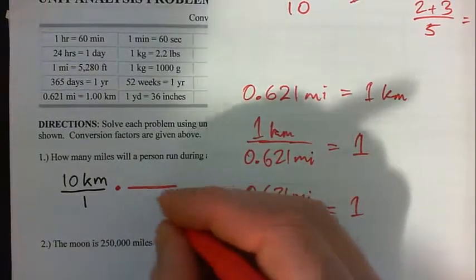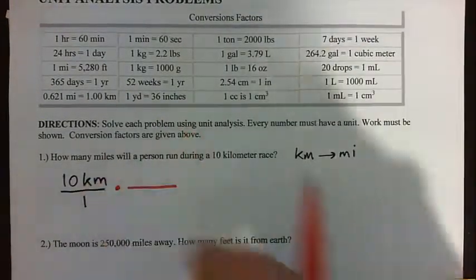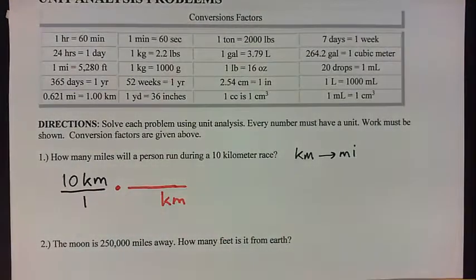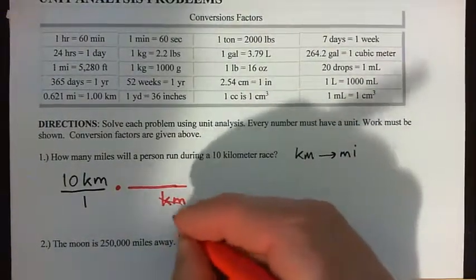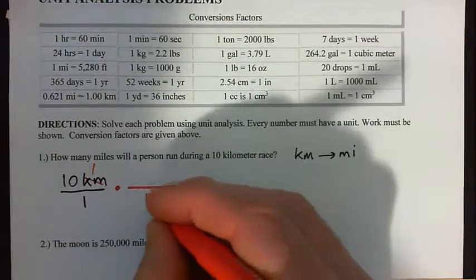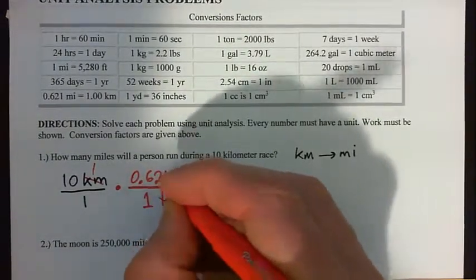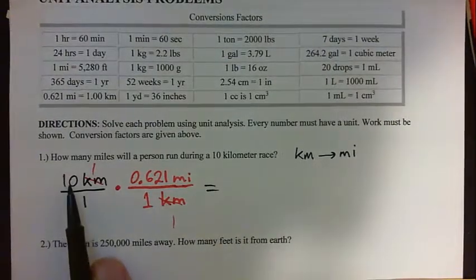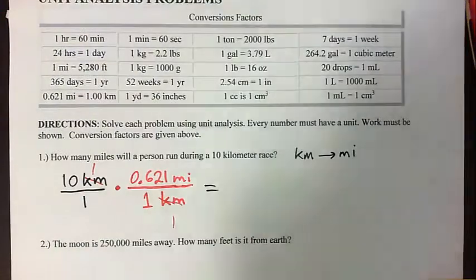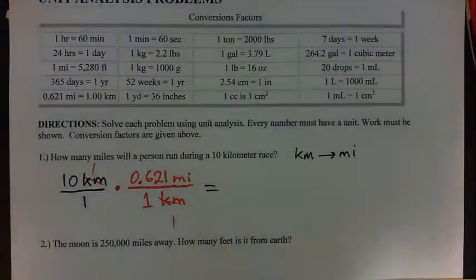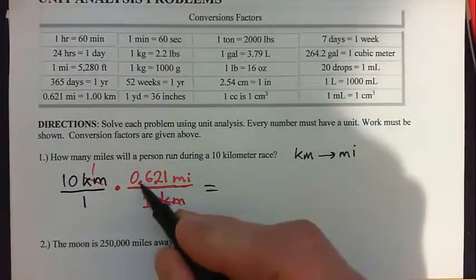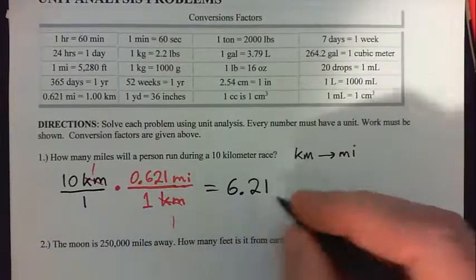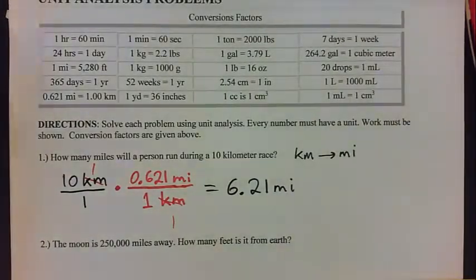What we want to do is go from kilometers to miles, so we want the kilometers to cross-cancel. Put km on the bottom. The km's cross-cancel with the km on top. Now 1 kilometer equals 0.621 miles, so we end up with 10 times 0.621 on top. Multiplying a decimal by 10 moves the decimal point one space to the right, giving us 6.21 miles. That's question one.